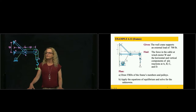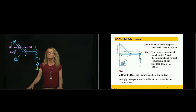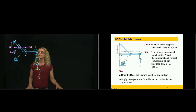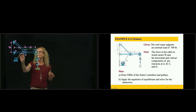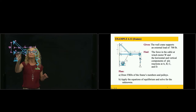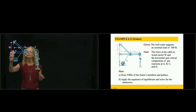We are in Chapter 6, and this is part of Frames and Machines. So this is a frame. It is composed by a beam. This beam has three pins: one at A, that is fixed to the wall.